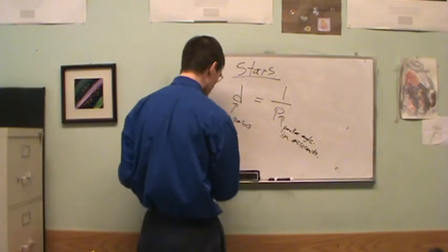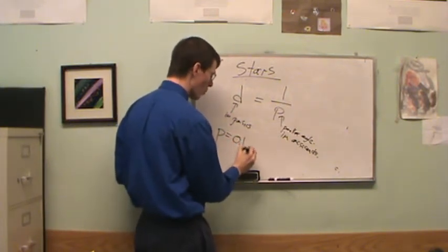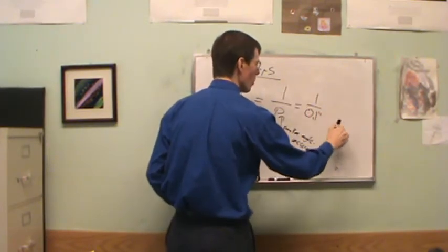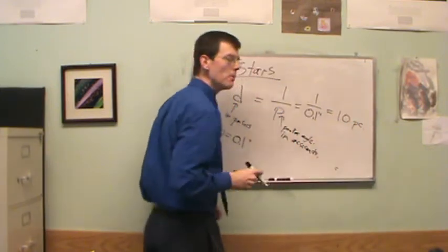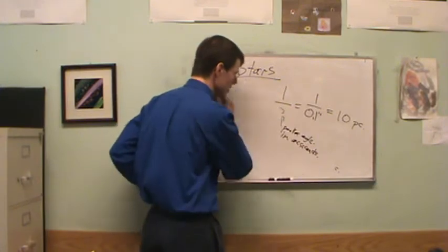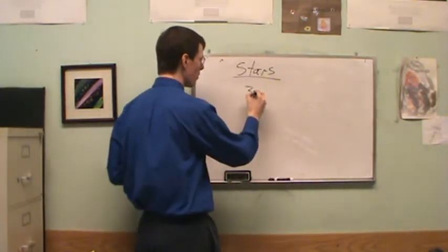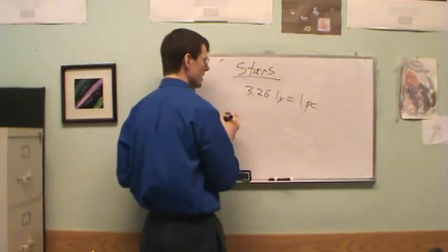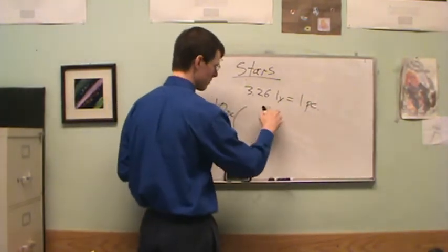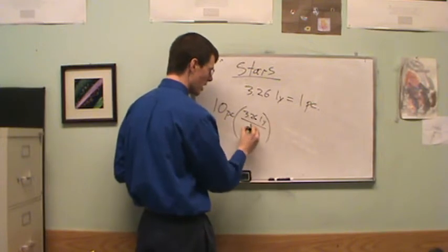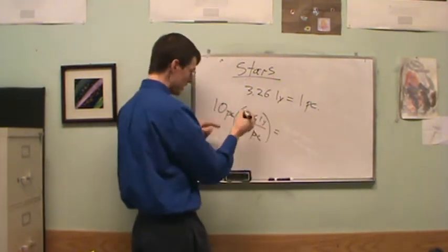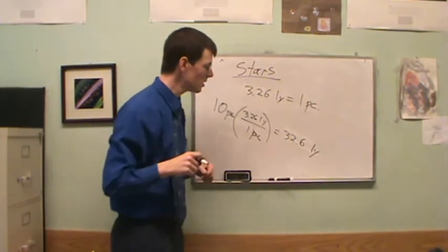Suppose I measure a parallax angle of 0.1 arcseconds. I just do one divided by 0.1, which equals 10 — so this star is 10 parsecs away. To convert to light years: 10 parsecs times 3.26 light years per parsec gives 32.6 light years. That's the distance to this star.